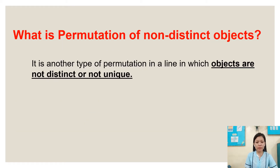So what is permutation of non-distinct objects? It is another type of permutation in a line in which objects are not distinct or not unique.